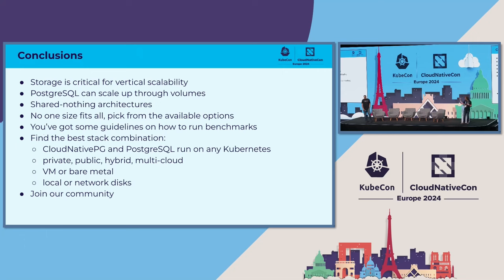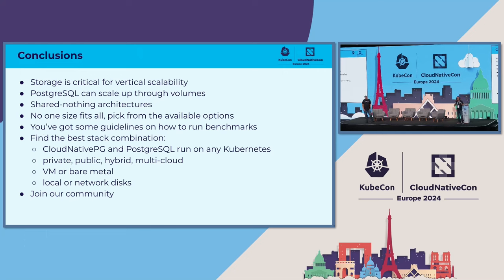Postgres can scale up through volumes. My recommendation is to use shared-nothing architectures. Maybe consider placing Postgres in nodes separated from applications, but running in the same Kubernetes clusters. There's no one-size-fits-all, but that's also the good part — the work is on you, because your organization is unique. You have an amazing set of technologies: Kubernetes, Postgres, and Cloud Native PG. You're free to run it everywhere — private, public, hybrid, multi-cloud, bare-metal, VM — using local or network disks. Join our Data on Kubernetes community if you want to know more about stateful workloads, and also the Cloud Native PG community.